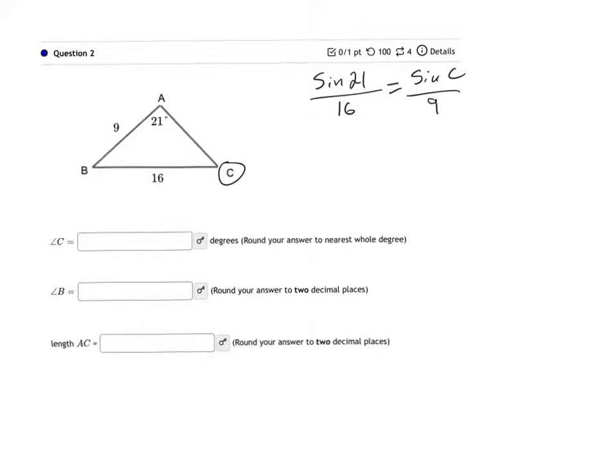Then when I solve this, I can multiply both sides by 9, and I end up with 9 times the sine of 21 over 16 is equal to the sine of C. So then you're going to put this into your calculator, making sure you put parentheses around the 21 in the sine. And when you do that, you're going to end up with a number like 0.20158 is equal to the sine of C.